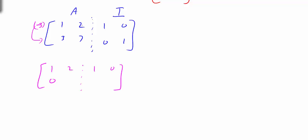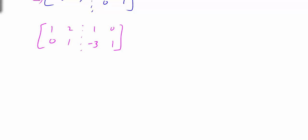Negative 6 plus 7 gives us 1. Then negative 3 times 1 added to 0 is negative 3, and then 0 added to 1 is 1. So now we have what we wanted — this entry is a 1 and this entry is a 0.